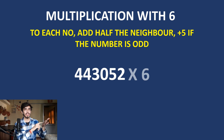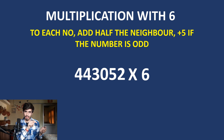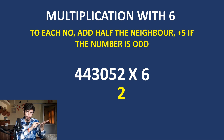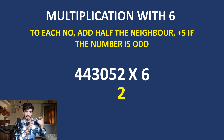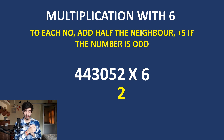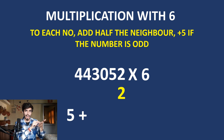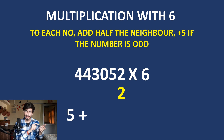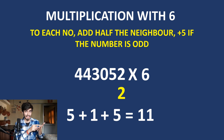Let's apply the key for 6 with an example. For 2 — it is even, no addition of 5, and the neighbor is 0, so just 2. For 5 — it is odd, so we add 5 to the number. To each number, add half of its neighbor: half of 2 is 1, giving 5 plus 1 equals 6. Since 5 is odd, add 5: 6 plus 5 is 11. We write 1 and put a dot in front to indicate a carry.